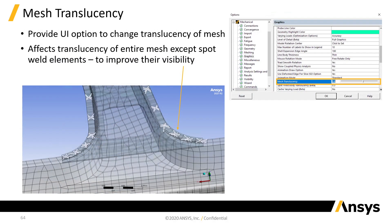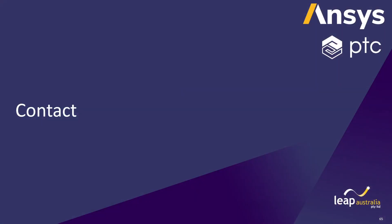Mesh translucency — there's an option now in mechanical graphics to change the transparency of your mesh, so that allows you to look through the mesh and may be interesting to create better types of views.